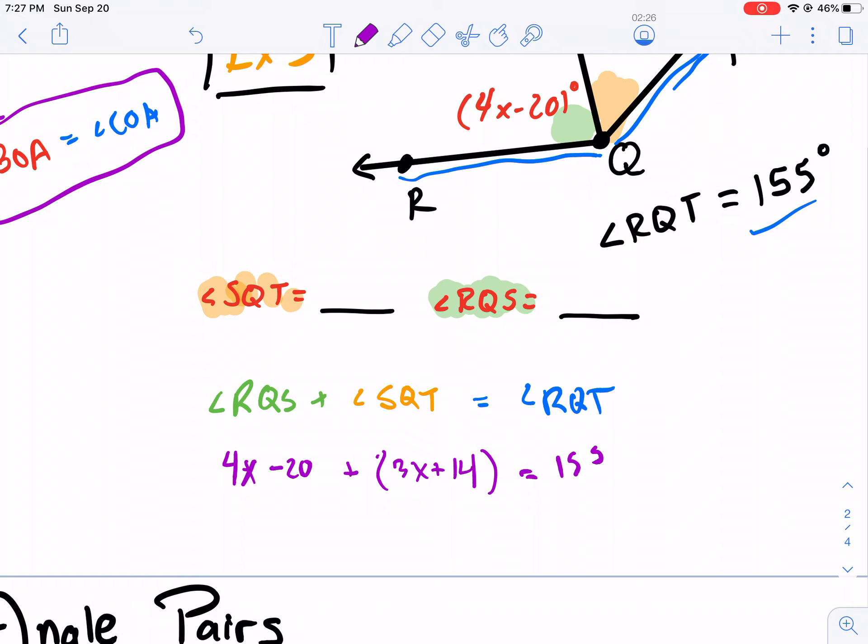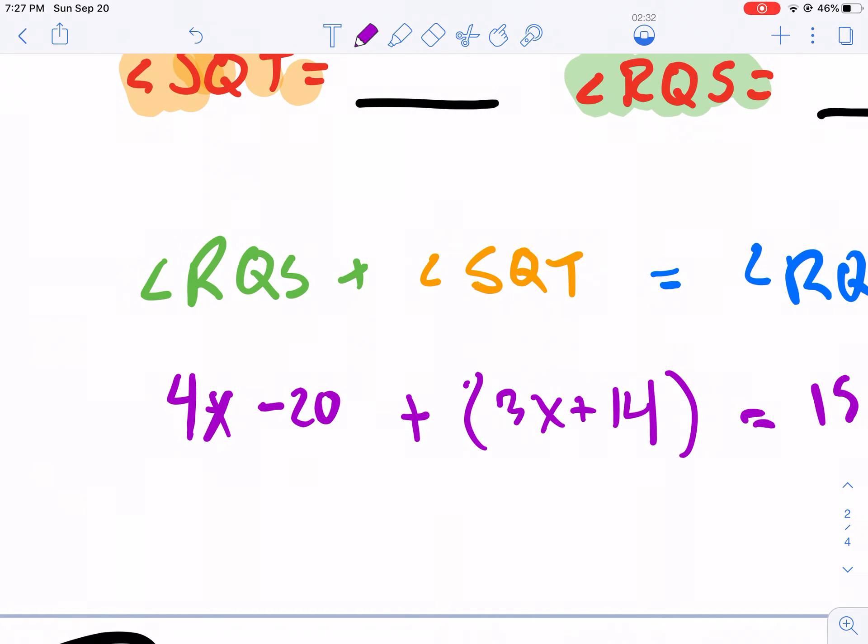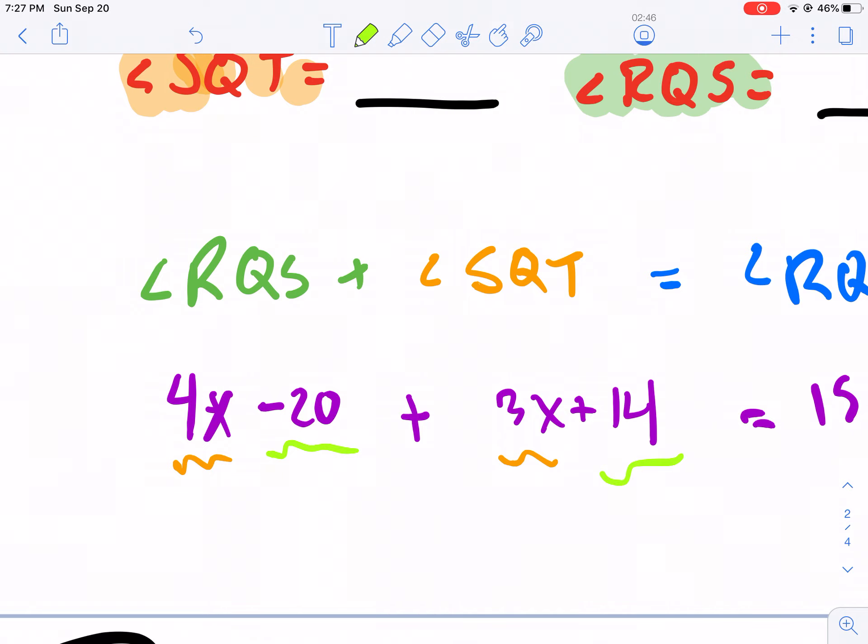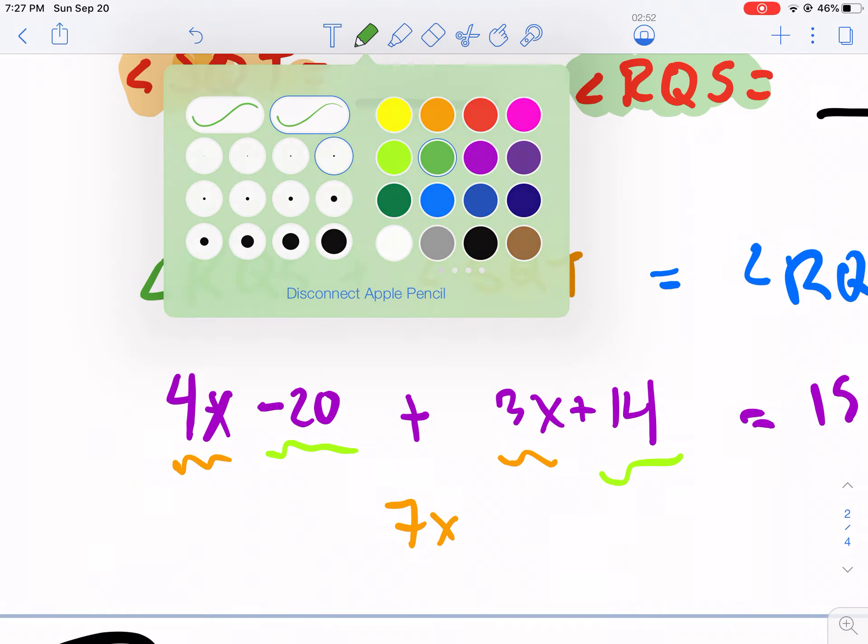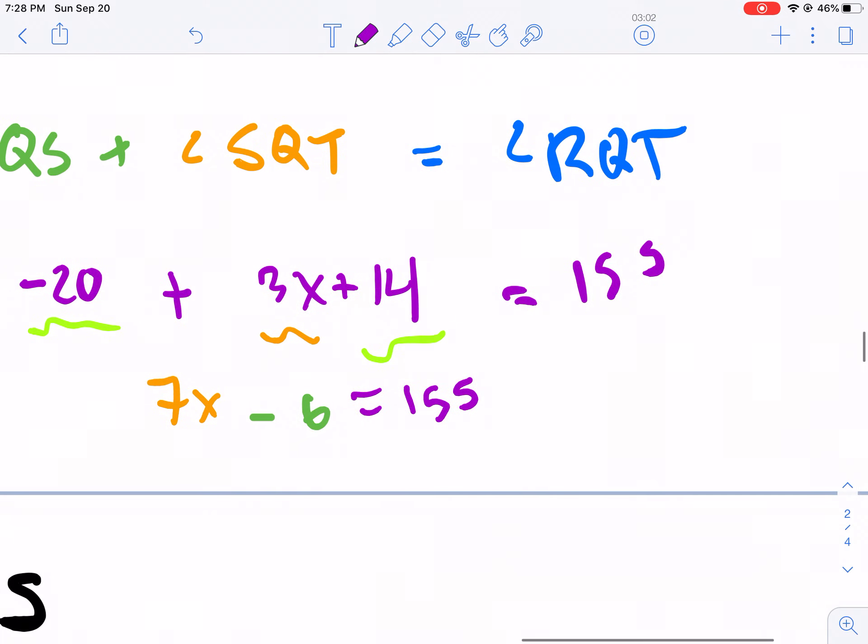So now what I'm going to do is I essentially can get rid of the parentheses because it's a plus sign. It's not a minus sign outside the parentheses. So I'm going to erase my parentheses first, as I said. And now I'm going to combine my like terms, 4X, 3X. Negative 20, positive 14. Those are my like terms. So I'm going to start with 4X, 3X, I get 7X. And then I get minus 6. And this is going to be equal to 155. So I need to add 6 here. I got 7X equals 161.